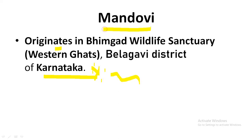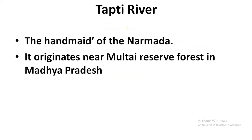Next is Taapti river. Taapti is called the Handmaid or Twin of Narmada — they are paired together as Narmada-Taapti. The Taapti river originates near Multai Reserve Forest in Madhya Pradesh.